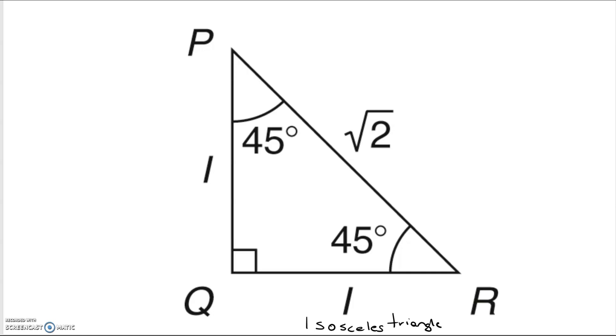So we've got two sides the same, one unit, and using Pythagoras to say that 1 squared plus 1 squared equals PR squared, if we didn't know it, so that's 2 equals PR squared, so PR equals the square root of 2.